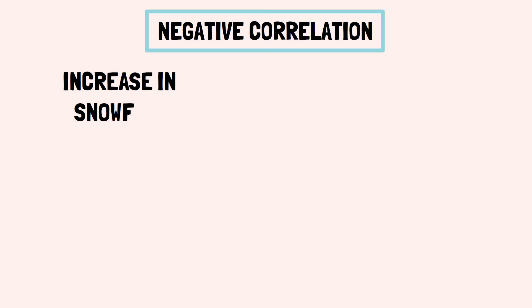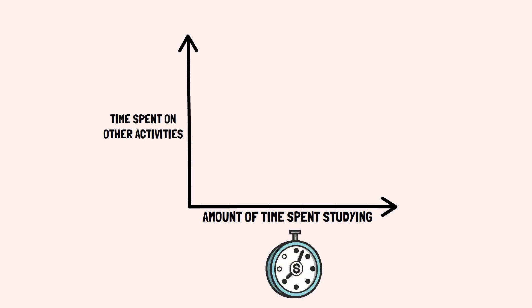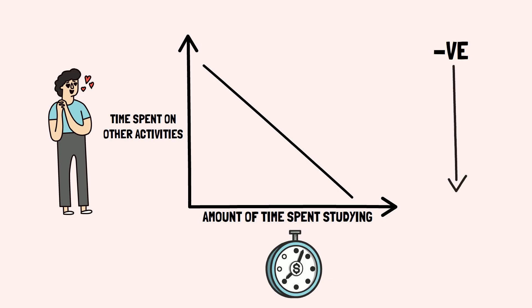On the other hand, a negative correlation tells us that as the value of one variable increases, the value of the other variable decreases. For example, you may hypothesize that as the hours of study time increase, the number of hours spent in other activities will decrease. Here, you are expecting a negative correlation ranging from 0 to negative 1.0.